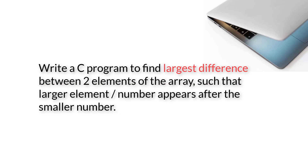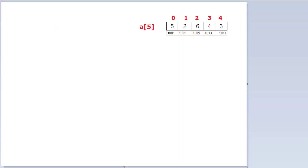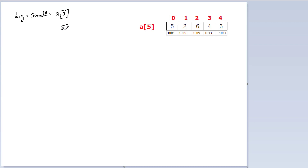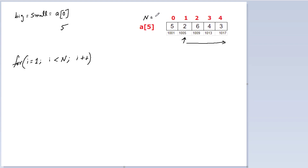Let me explain that with an example. Consider this as our array. I'll take two variables, big and small, and initialize them with a[0], because we need some value to compare with other elements of the array. So a[0] has 5, meaning big and small both start with 5. I'll write a for loop starting at index 1, since big and small already hold the value at index 0, so N is 5 here.